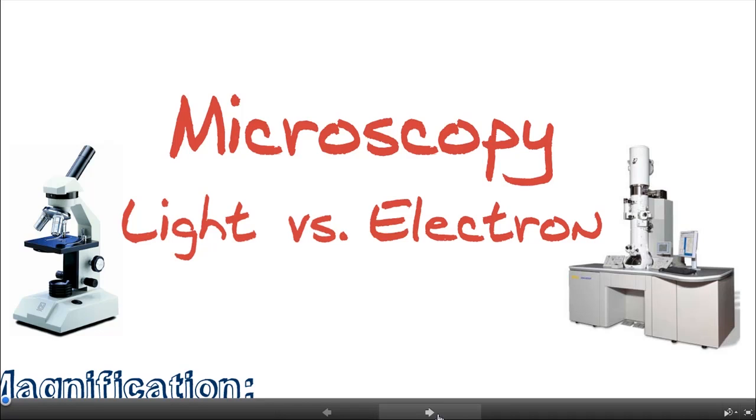So light microscopy is what we've been doing. We're basically just using a light source, it usually goes through the specimen, and we use a series of lenses to magnify that to produce an image that's much larger. An electron microscope essentially works the same way, but the main difference is it uses a beam of electrons, and it can see things that are a lot smaller, and it can essentially produce an image with a lot more detail of structures that are a lot smaller.